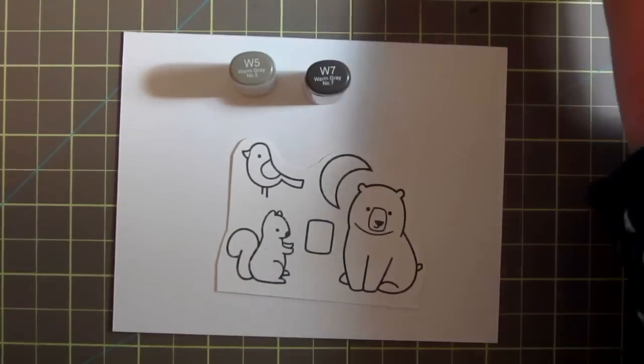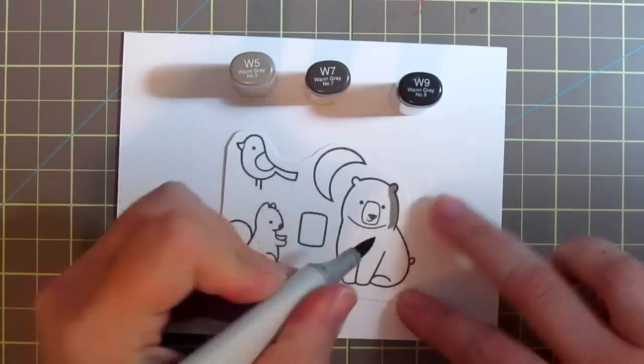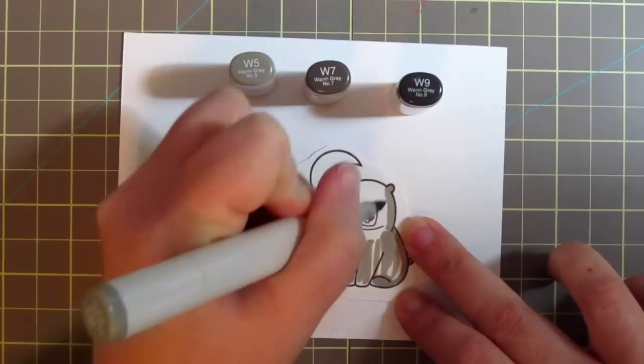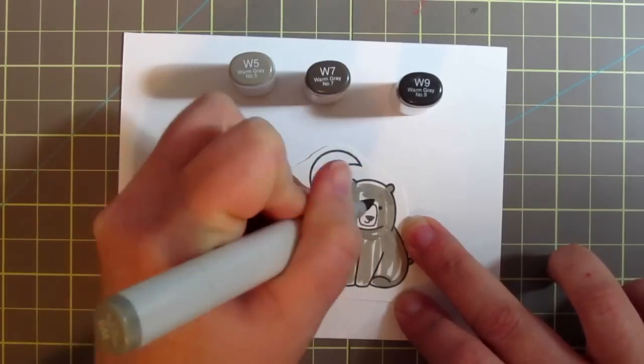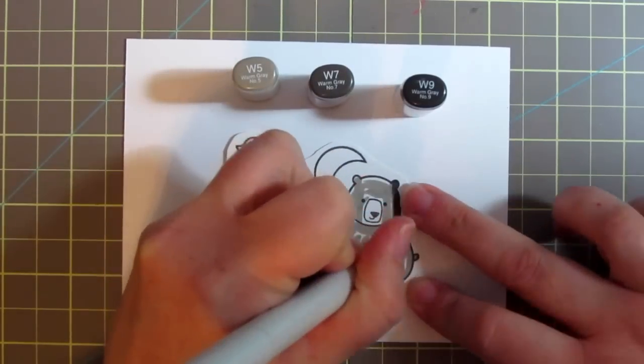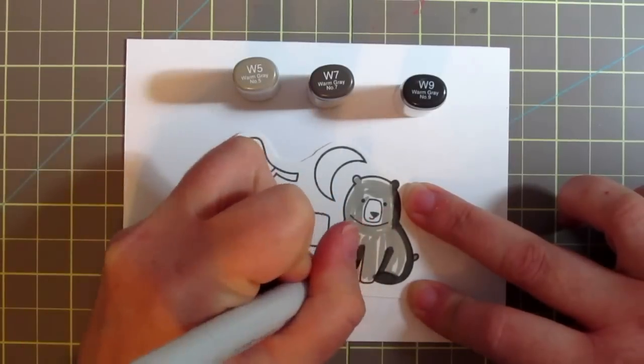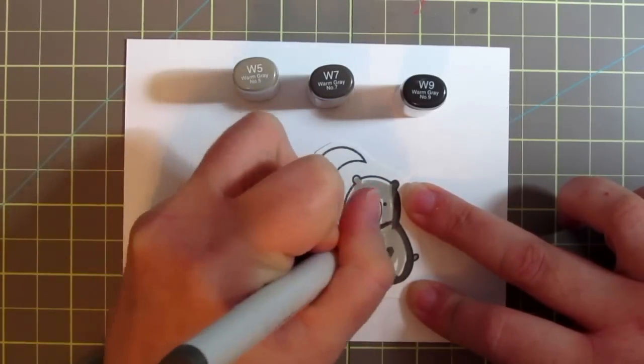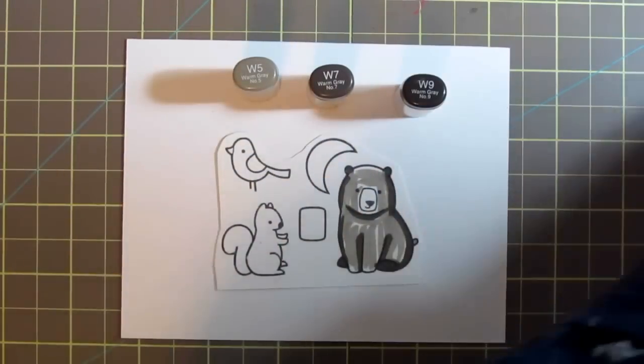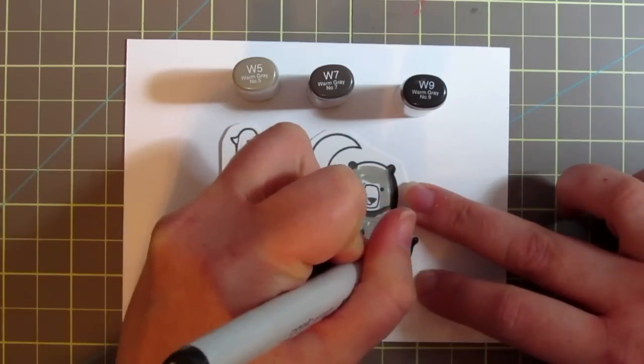I'm going to begin with my bear. I decided to make him a black bear, so I pulled out W5, W7, and W9. The first thing I'm going to do is give him a quick wash of that W5 just to get the paper saturated so that the colors are going to blend over top really well. Then I'm going to go in with my W7 and begin to highlight the shaded areas, going around the edges and defining where I want to put those shadows.